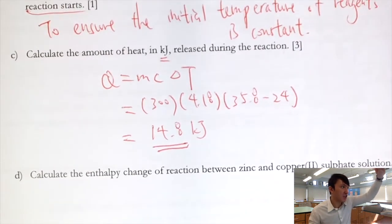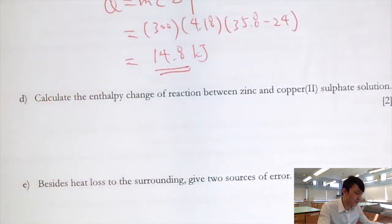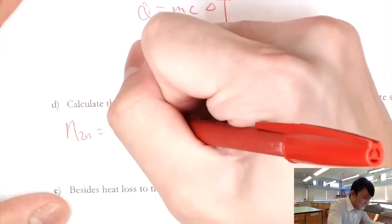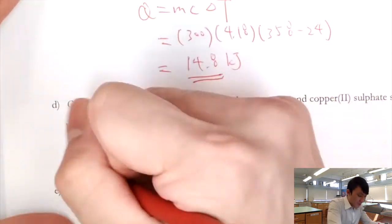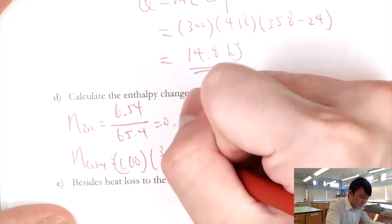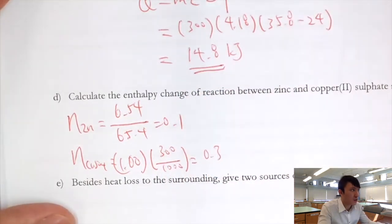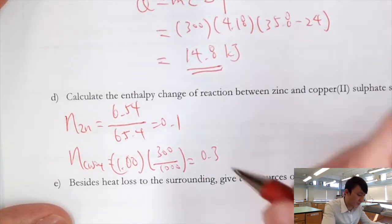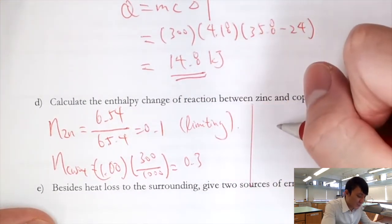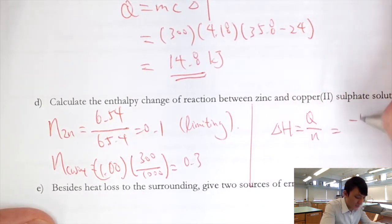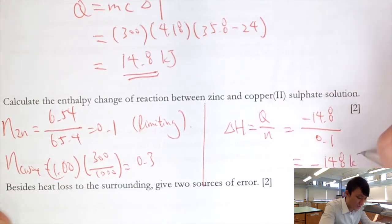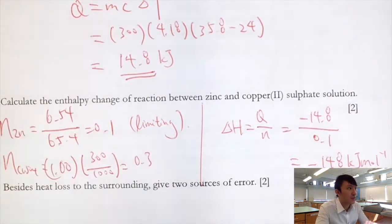For part D, we first determine the limiting reagent. Moles of zinc = mass/molar mass = 0.1 mol. Moles of copper(II) sulfate = 1.00 × (300/1000) = 0.3 mol. Since the ratio is one-to-one, zinc is limiting. Therefore ΔH = −q/n = −14.8/0.1 = −148 kJ/mol.